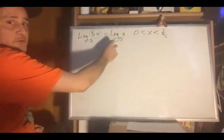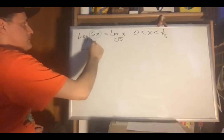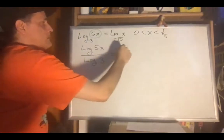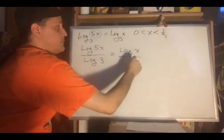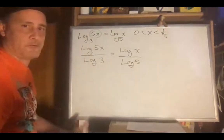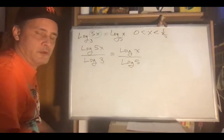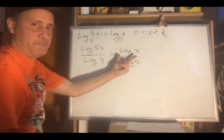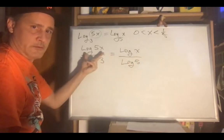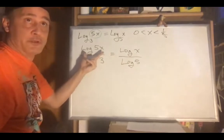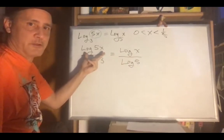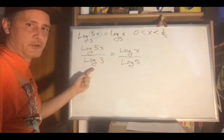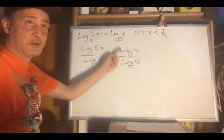As far as solving this, first we've got to do the change of base property, which converts everything to base 10. Now we've got to get the log x on the same side by itself. We've got log 5x, which we can turn into log 5 plus log x. So I'm going to go ahead and multiply by log 3, and that way this becomes a fraction times log x.